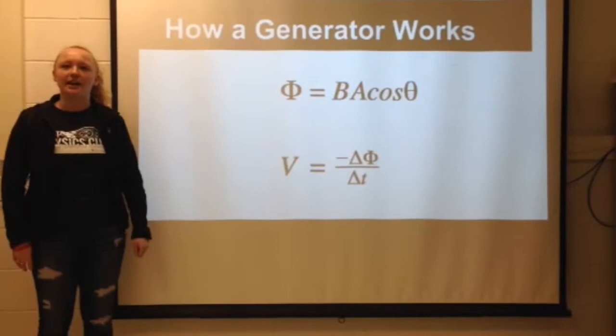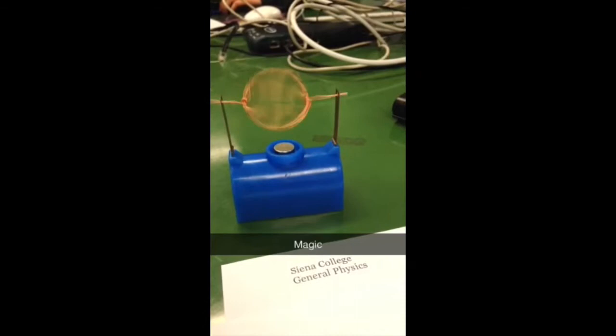The change in magnetic flux results in a voltage. This is calculated by dividing the change in magnetic flux by the change in time.